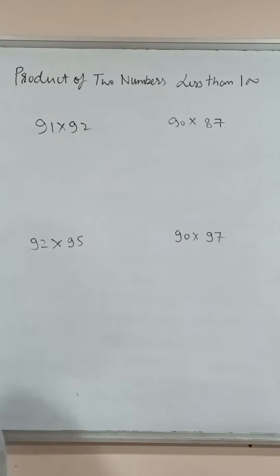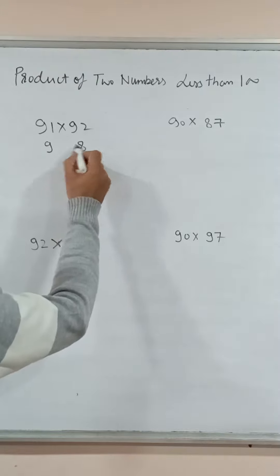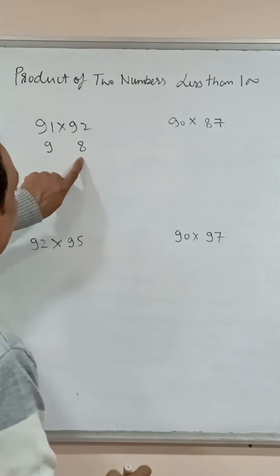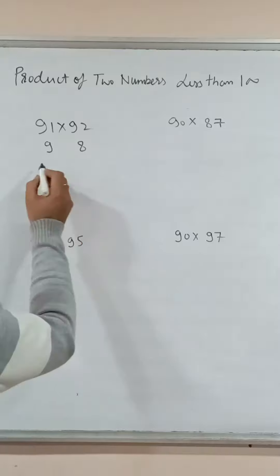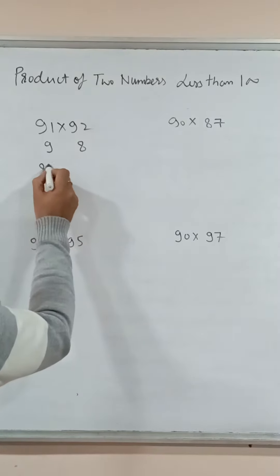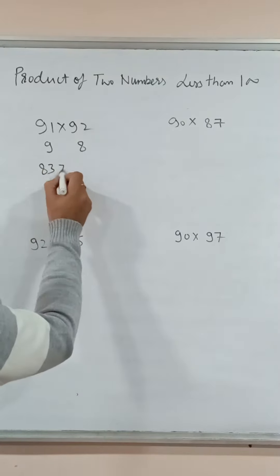First number 91 into 92. 91 is 9 small from 100, and 92 is 8 small. 91 minus 8 and 92 minus 9 both are same. This is 83. 9 times 8 is 72.